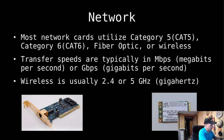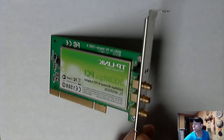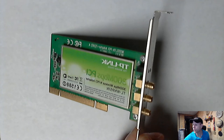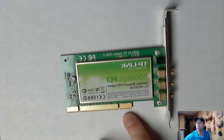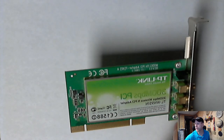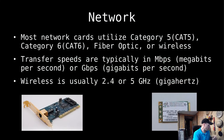In a desktop you might have a whole dedicated card for wireless networking — this one has three ports for three different antennas and plugs into the motherboard. Again, different form factors but essentially the same capability: wirelessly connecting to some other system.